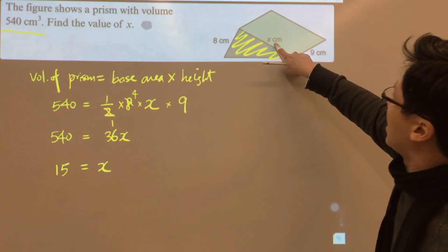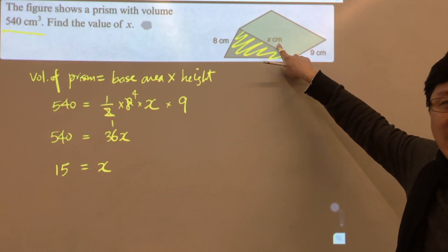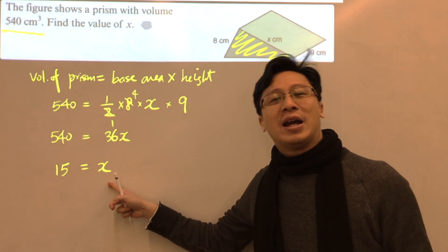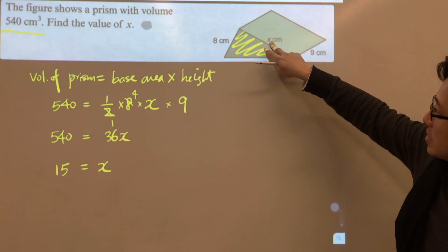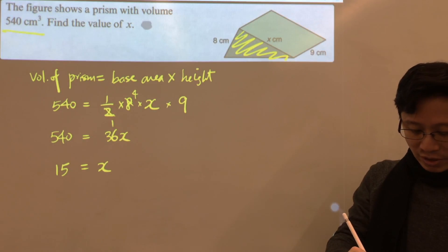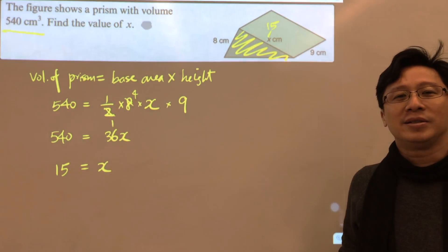be 15. And notice that we have x cm here, so therefore x should not have any unit. And because this is x cm, therefore this will be 15 cm.